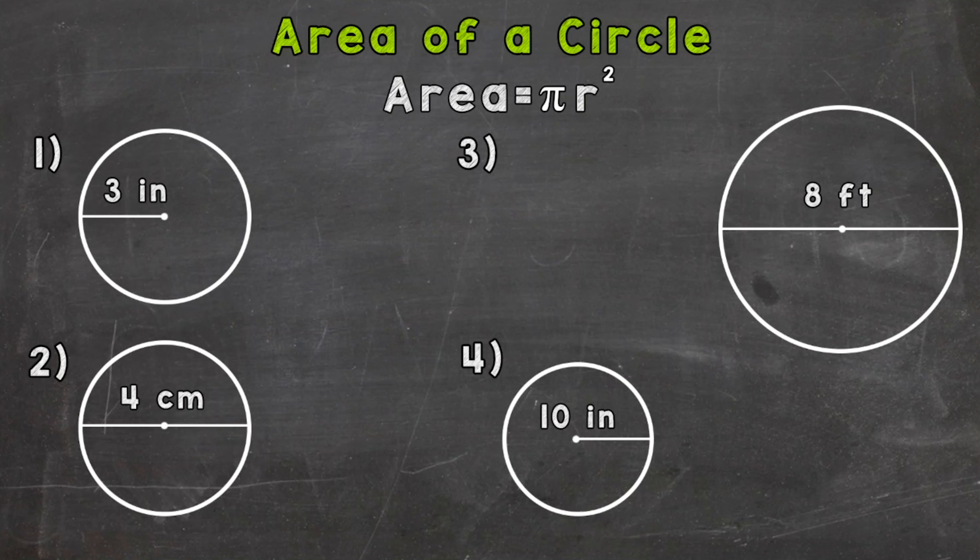Our formula that we are going to use is at the top of your screen. The area of a circle equals pi r squared. Now that symbol in there is the symbol for pi. And pi is the ratio of the circumference of a circle to its diameter. And it's the same for every circle.